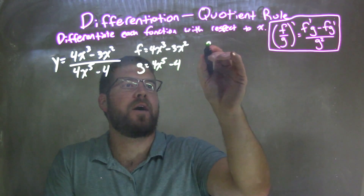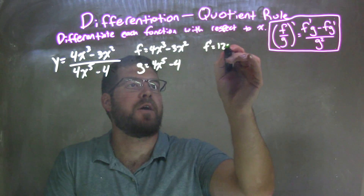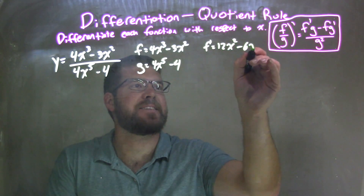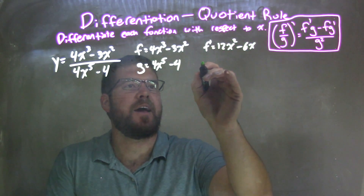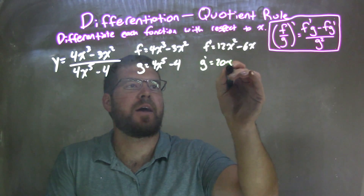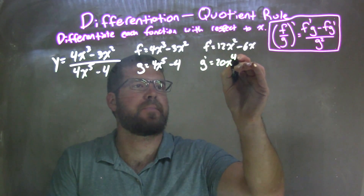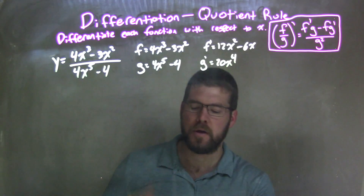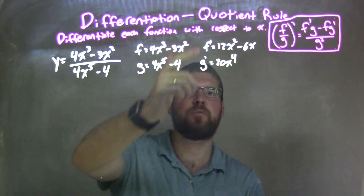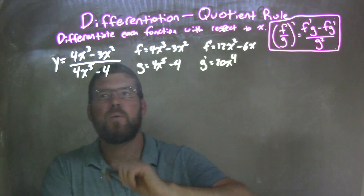Then I'm going to find f prime from there, so f prime is 12x squared minus 6x, and g prime is 20x to the fourth. So now I have f, g, f prime, g prime — I can apply the quotient rule.